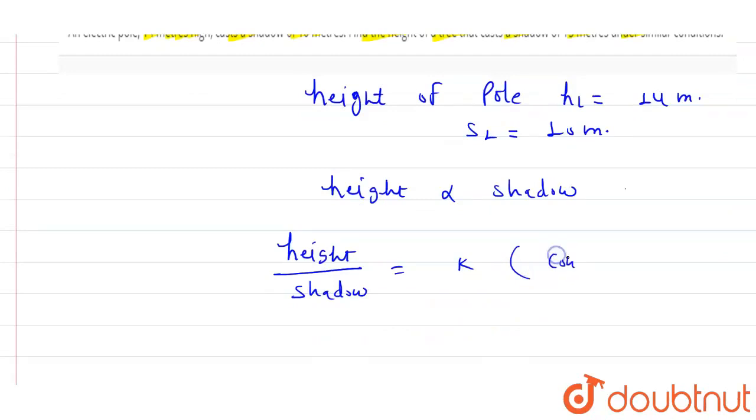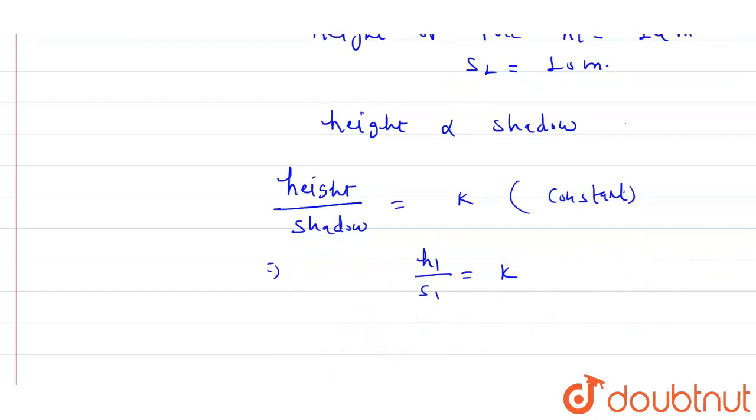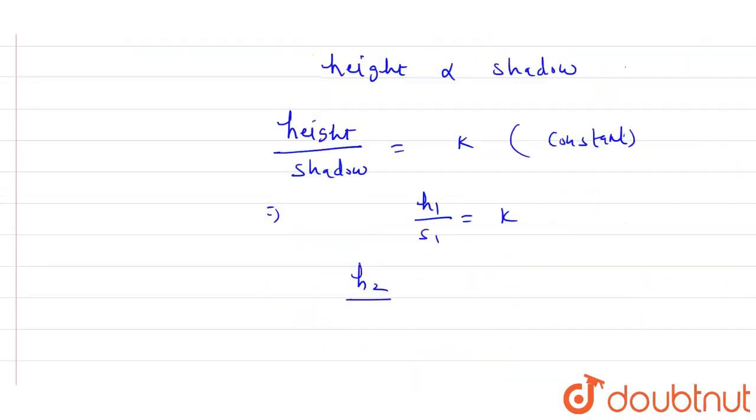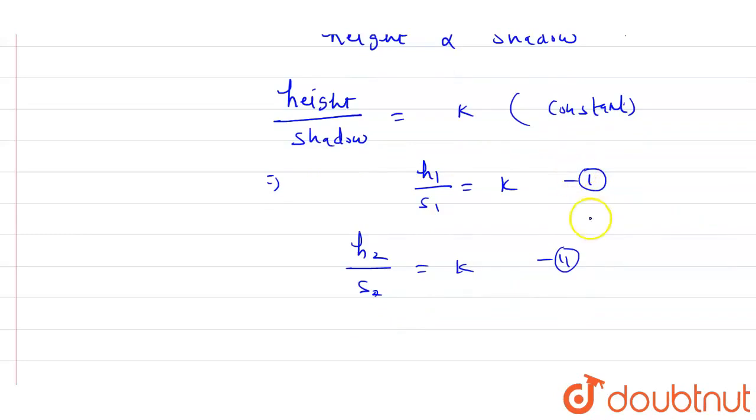We have a constant K. For the first case, H1 upon S1 equals K. For the second case, H2 upon S2 equals K. From these two equations, we can say H1 upon S1 is equal to H2 upon S2.